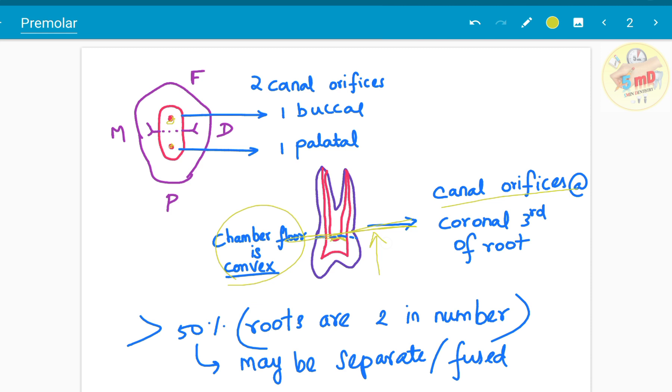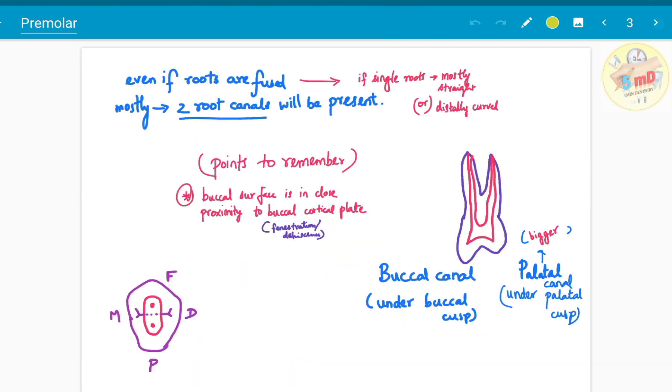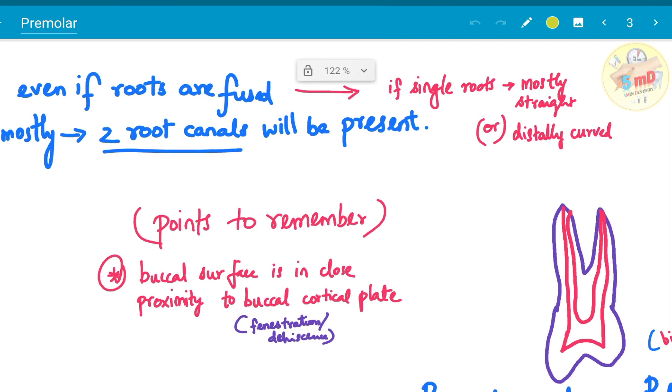The roots can be fused or usually two in number. 50% can be separate or fused. It is actually equal probability of the root being either separate or fused. Even if the roots are fused, mostly two root canals will be present. You should be sure about that to look for two root canals. Sometimes there can be a third canal, but two are more common. And if single roots are present, mostly they can be straight or distally curved.